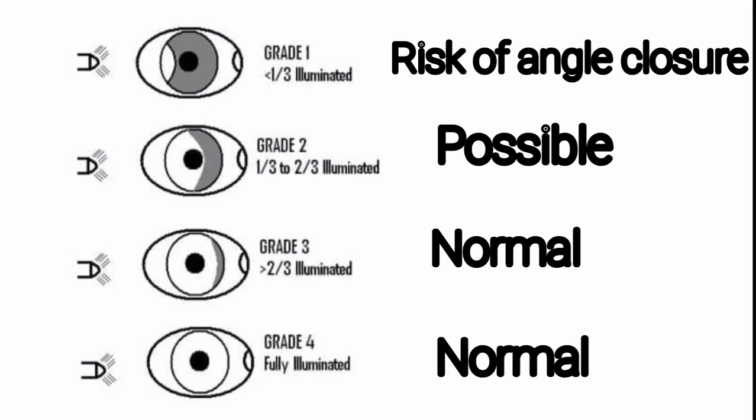Grade 3 and 4 is recorded as normal. Grade 2 indicates the possibility of angle closure. And Grade 1 indicates risk of angle closure. Hyperopic eyes usually have shallower anterior chamber and myopic eyes usually have deeper anterior chamber.